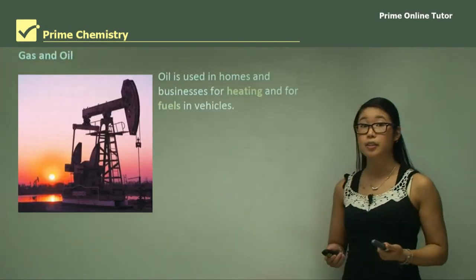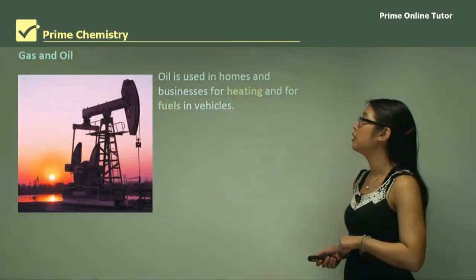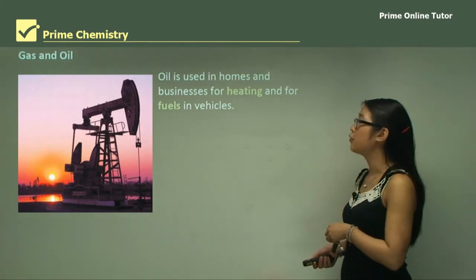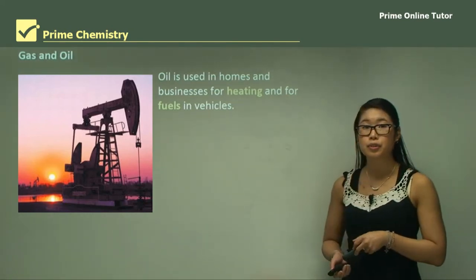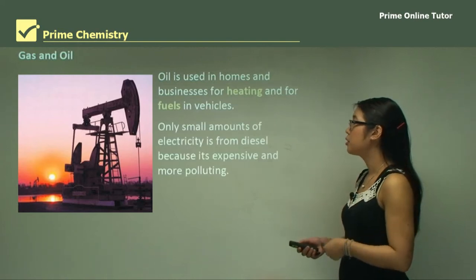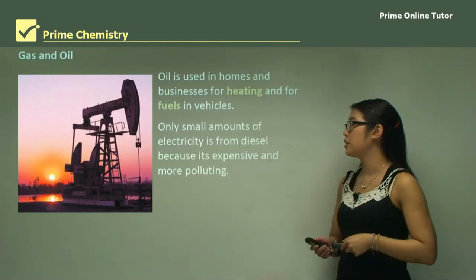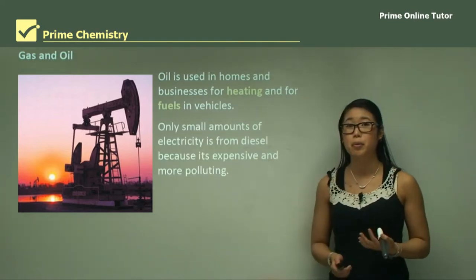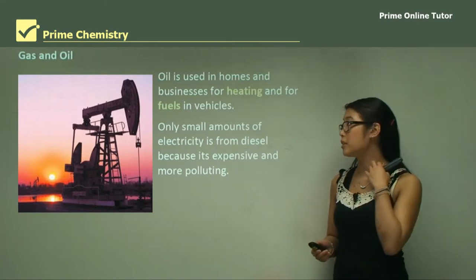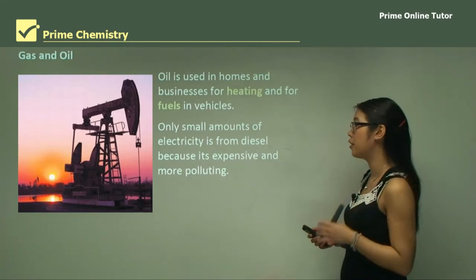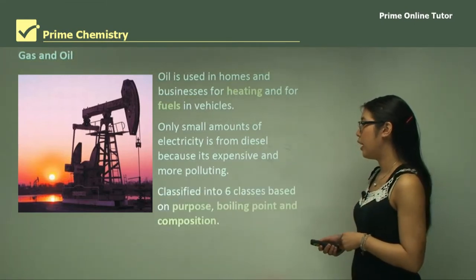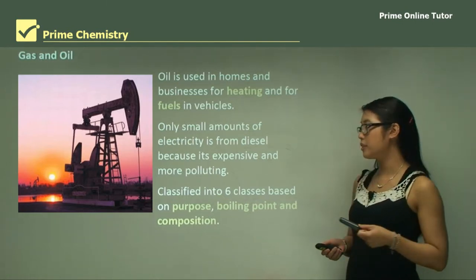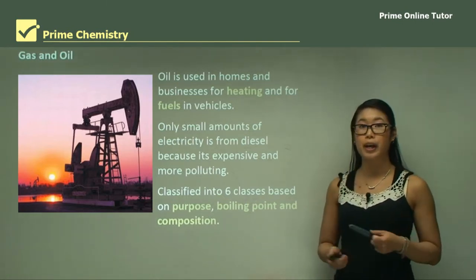Another one is gas and oil. Oil is used in homes and businesses for heating mainly and for use in vehicles. Only small amounts of electricity come from diesel because it's expensive and a bit more polluting since it doesn't combust efficiently. They're classified into six classes based on their purpose, boiling point and composition.